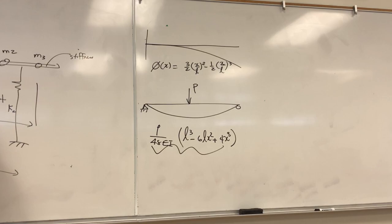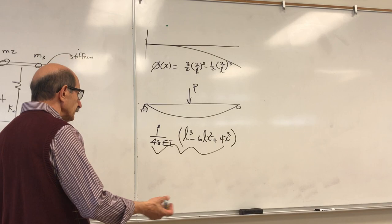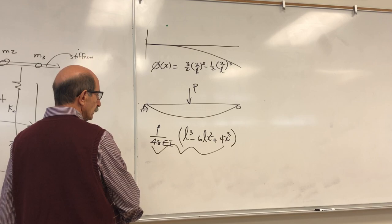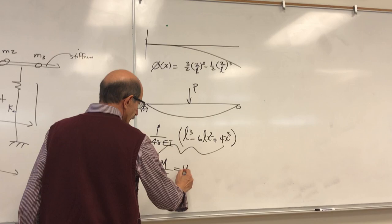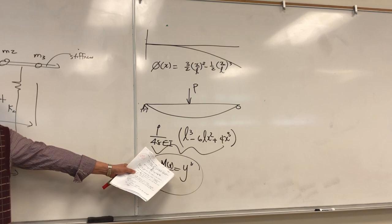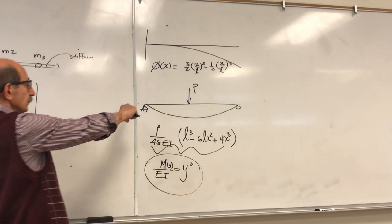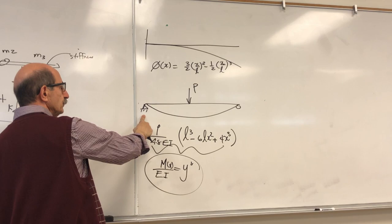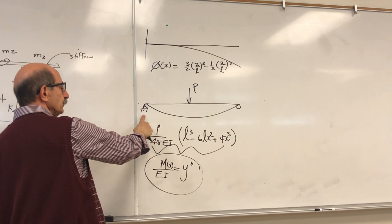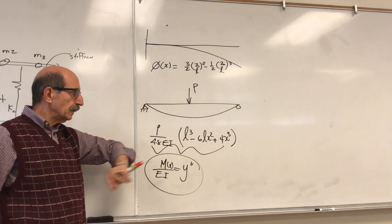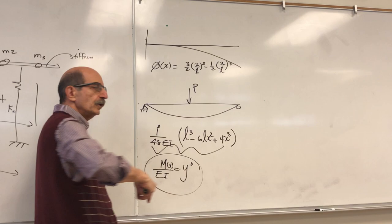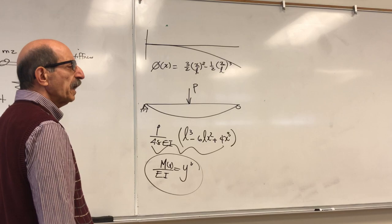You don't need to derive this function or memorize it — it's tabulated for standard structural elements. You can solve it using the differential equation EI·y'' = M(x), with boundary conditions such as zero displacement and zero slope. These are either given or looked up. What matters is that we need them to describe the qualitative deformation shape for Rayleigh's method.